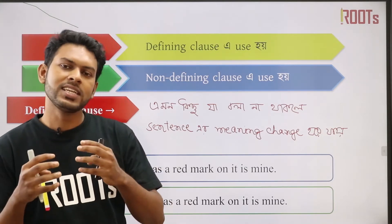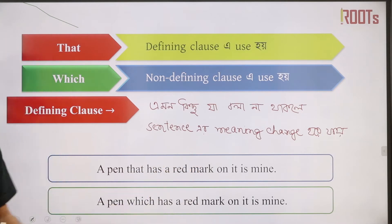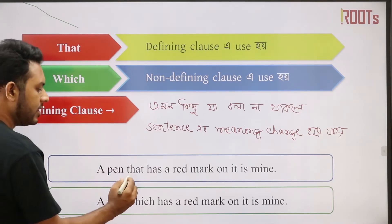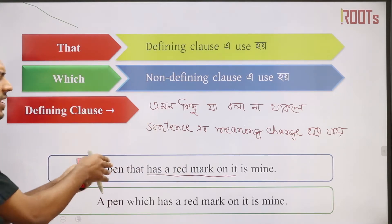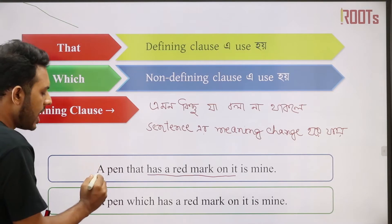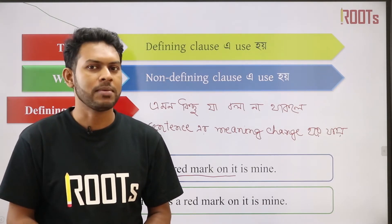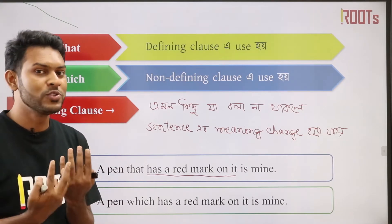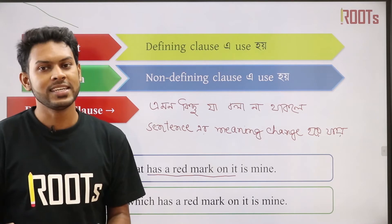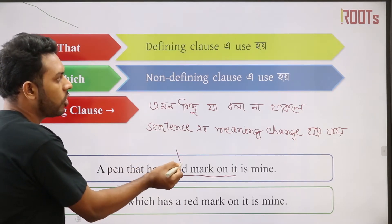We are going to look at examples of defining clauses. So, the example is: 'The pen that has a red mark on it is mine.' If we remove that defining part, we just say 'the pen is mine.' This means the clause 'that has a red mark on it' is defining which pen we are talking about.